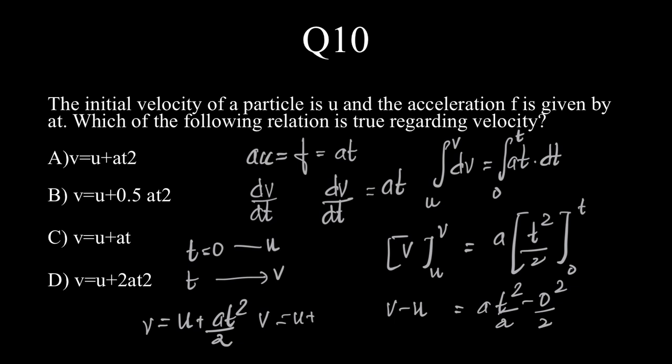Or v is equal to u plus a t square into 1 by 2, which is 0.5, which makes the correct answer as option B.